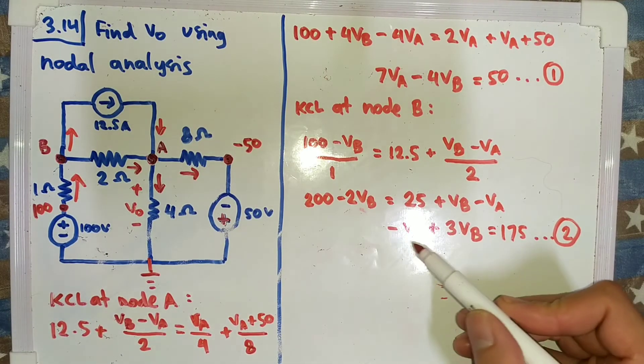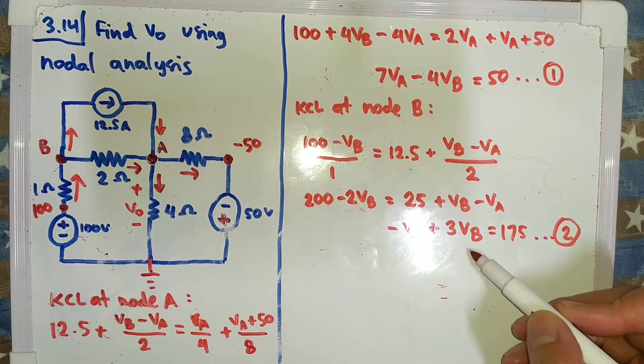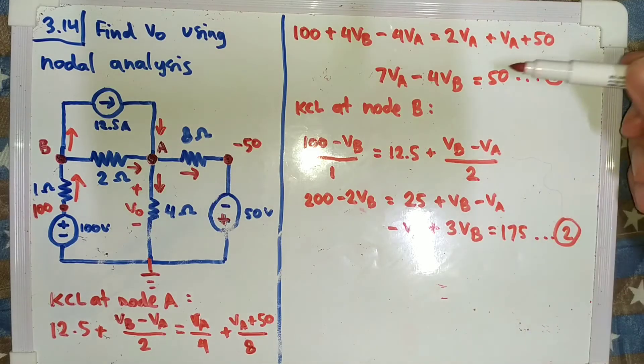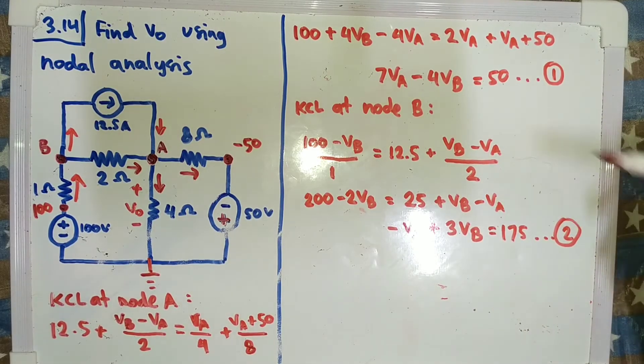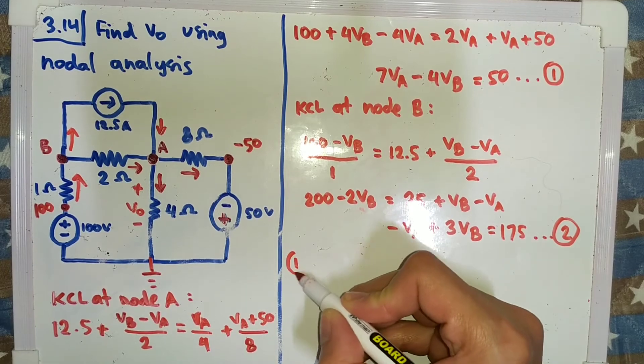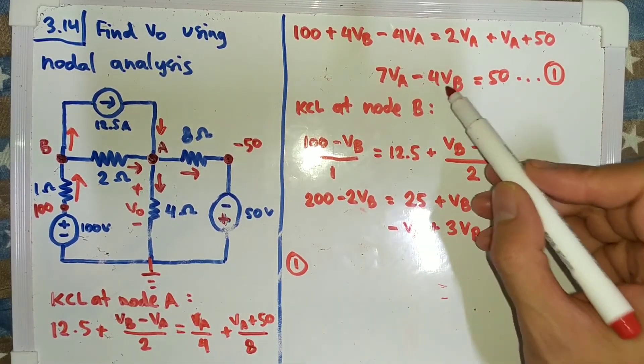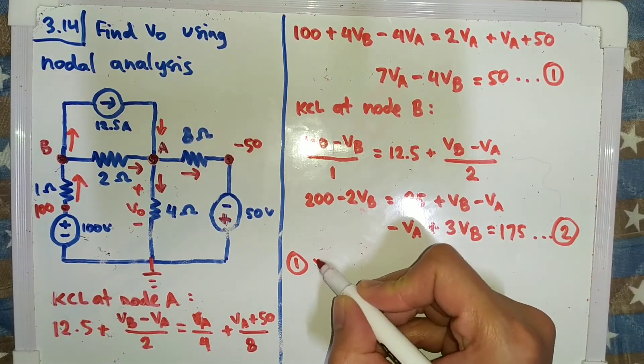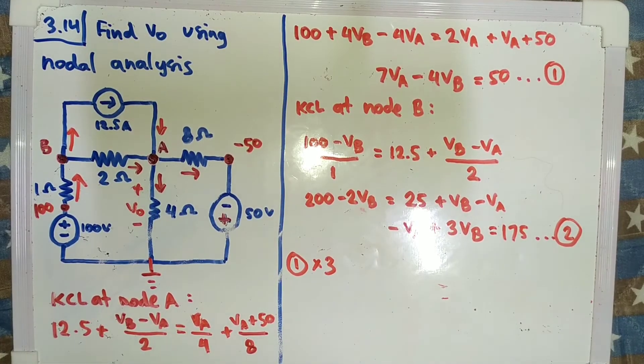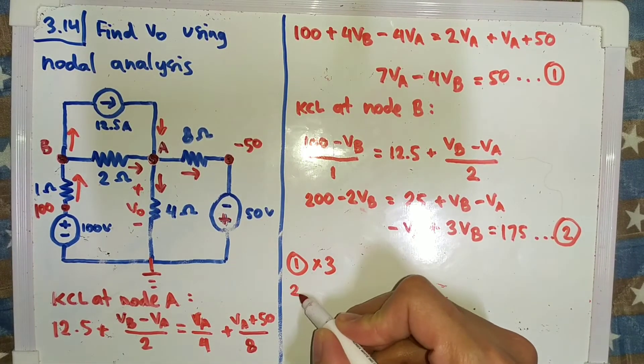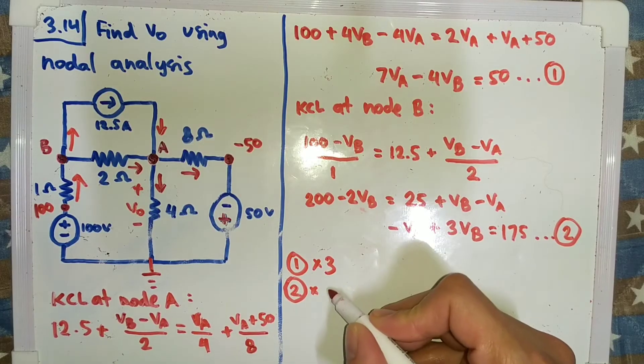Now we will need to solve for VA, so we need to eliminate the VB. This one is 4 and this one is 3. I can cancel each other by making this 12, so I will multiply number 1 by 3 and I will multiply equation number 2 by 4.